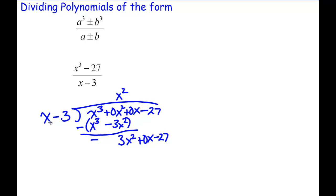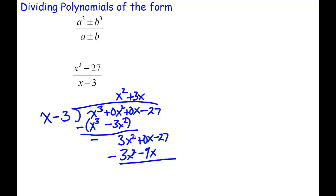Then you ask yourself: how many times does x go into 3x squared? That is positive 3x times. So we follow the pattern again — 3x times x gives me 3x squared, and then 3x times negative 3 gives me negative 9x. We subtract: those cancel out, this becomes 9x, and then we bring down the 27 to continue the division.